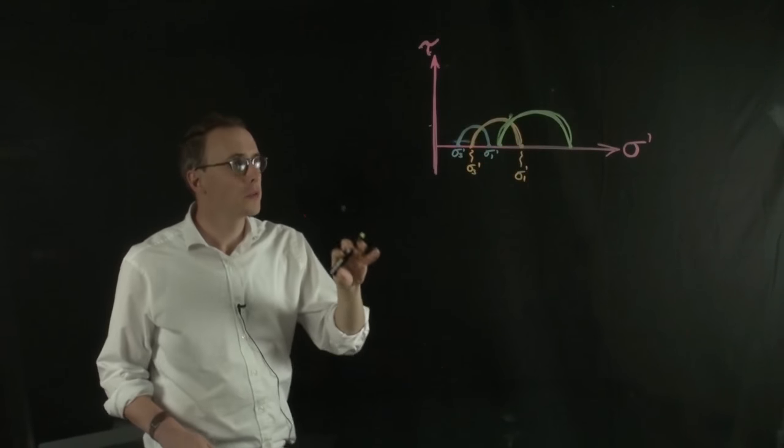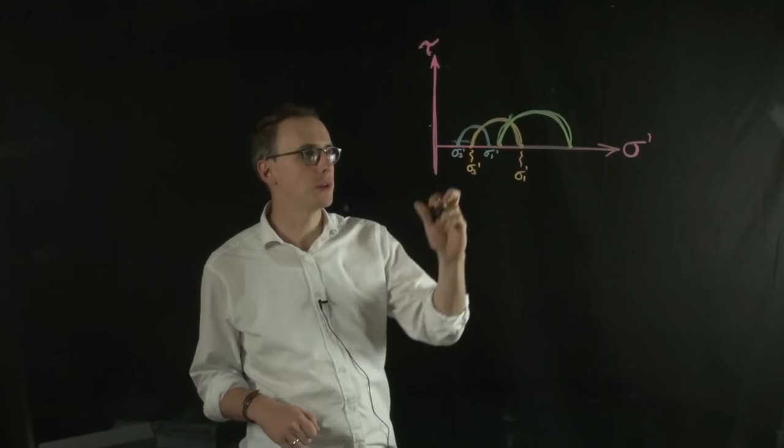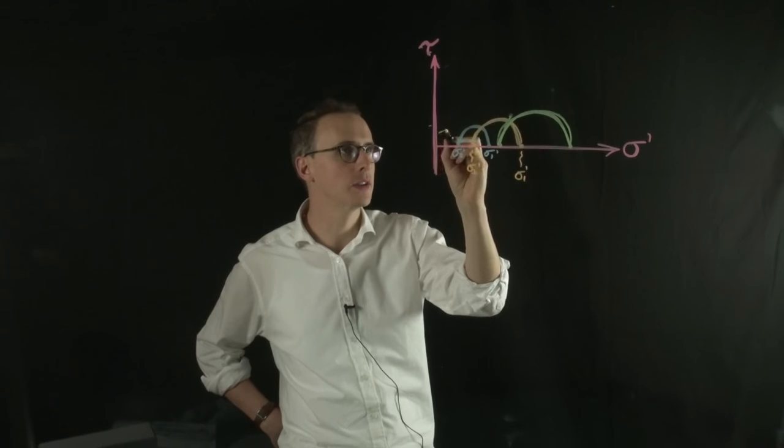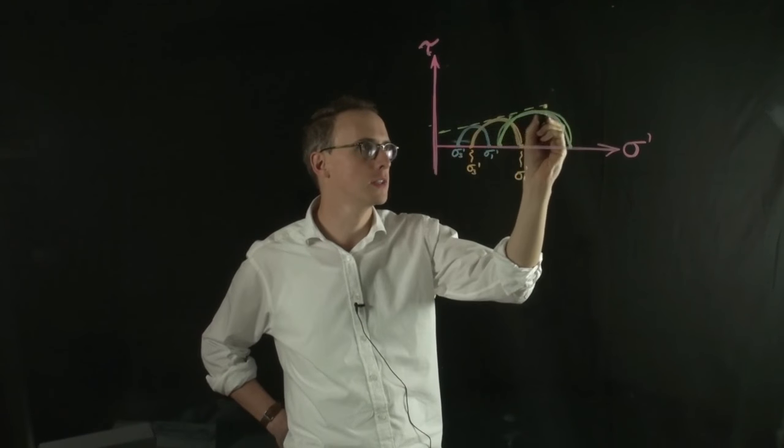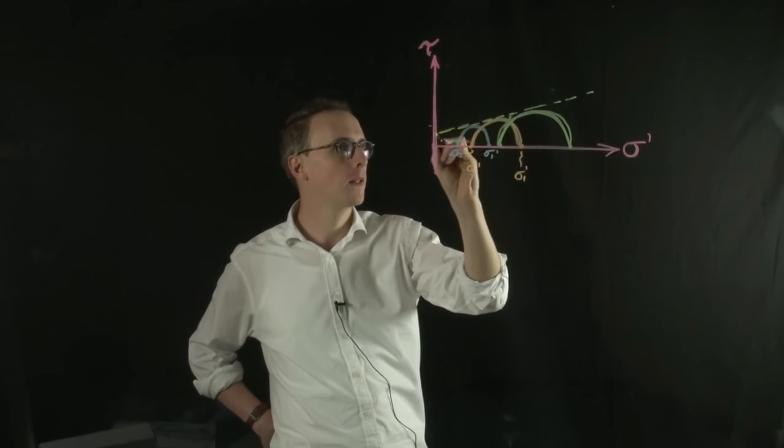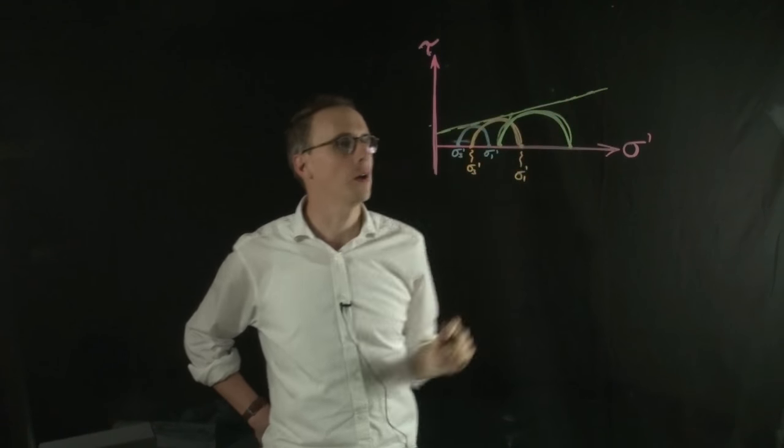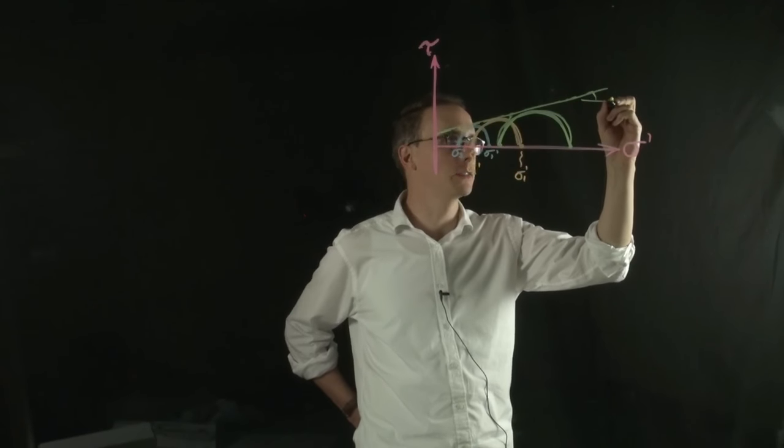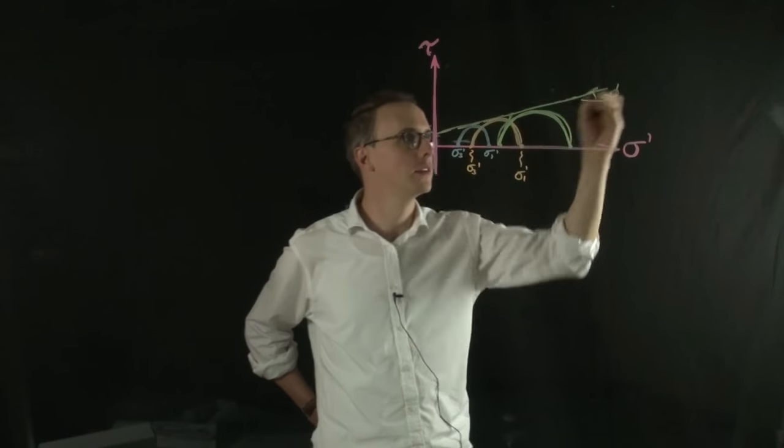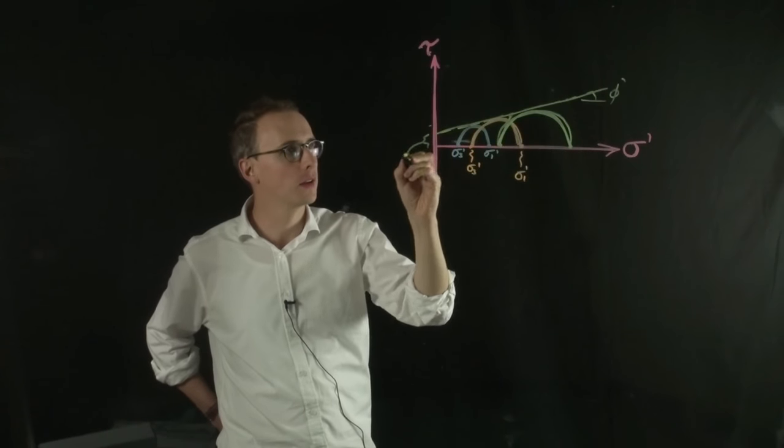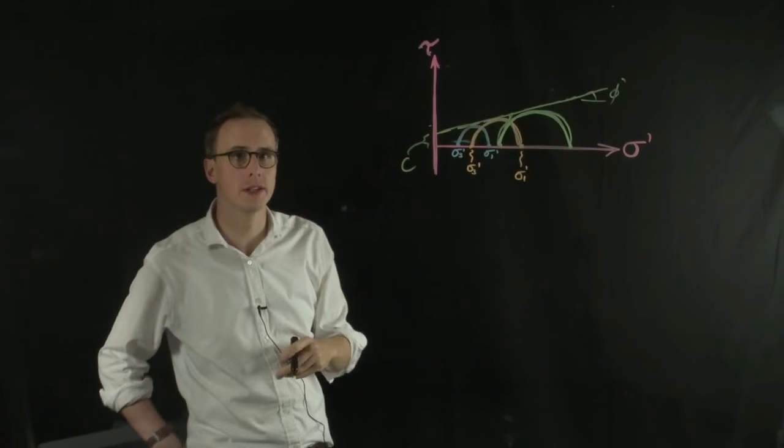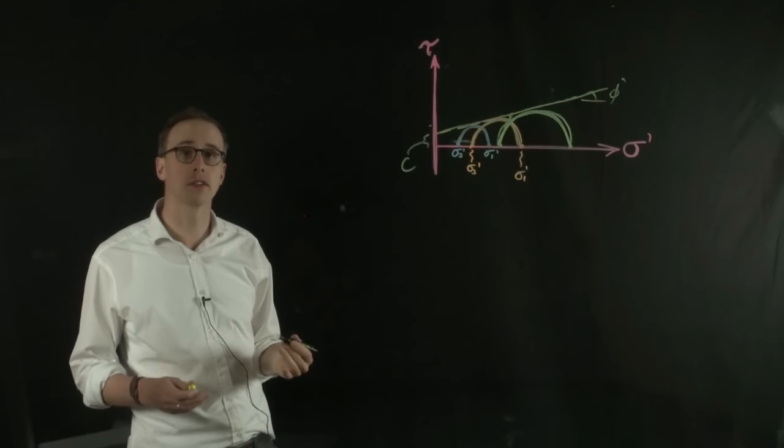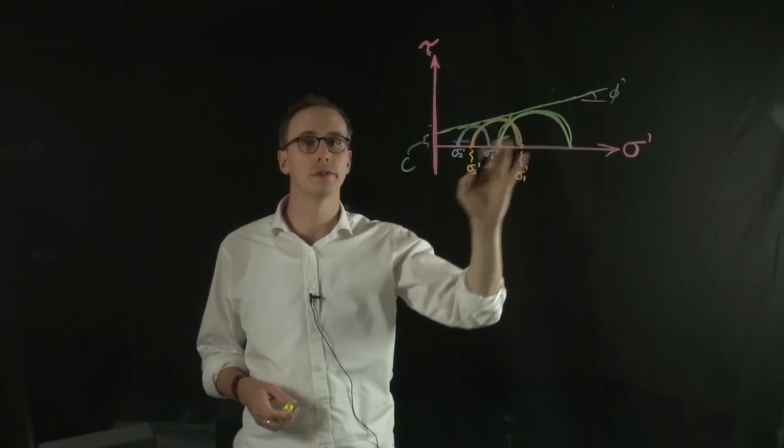Once we've got our three test results, what we can do is join the curves together with a line that touches all three curves. That would be our Mohr-Coulomb failure envelope. If we took the tan of the gradient of that line, we would find phi, and the intercept would be cohesion. We can use the triaxial test to derive shear strength parameters of angle of friction and cohesion.